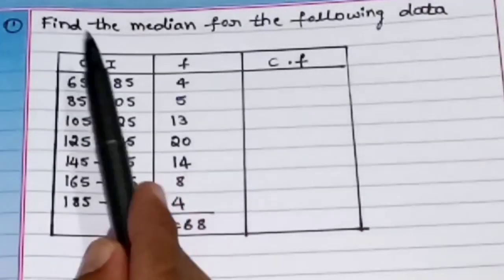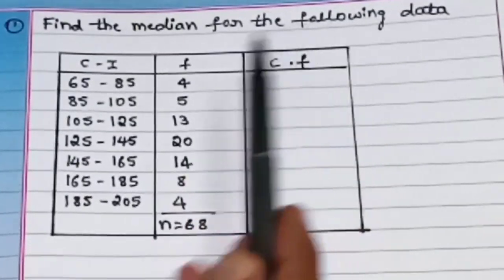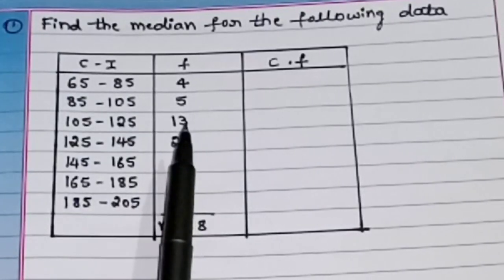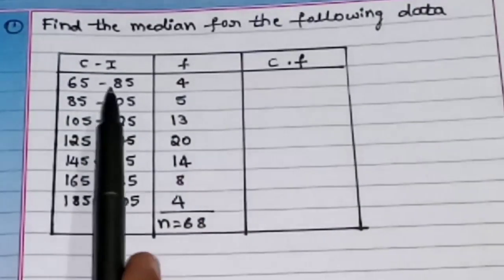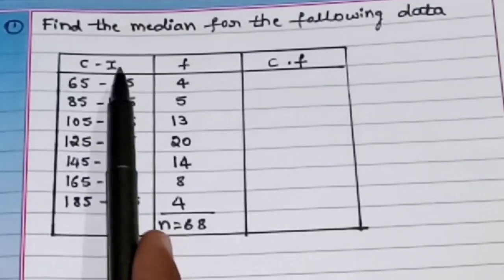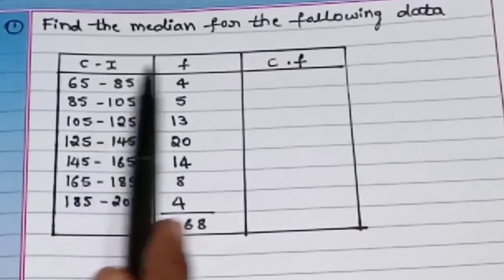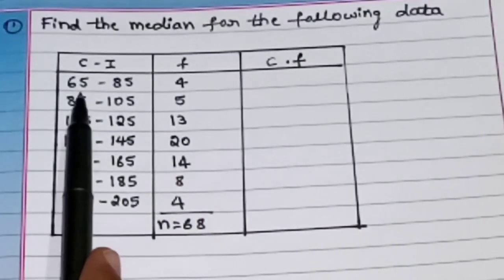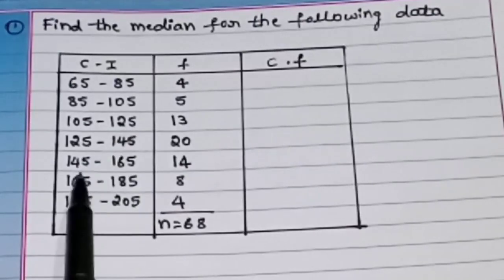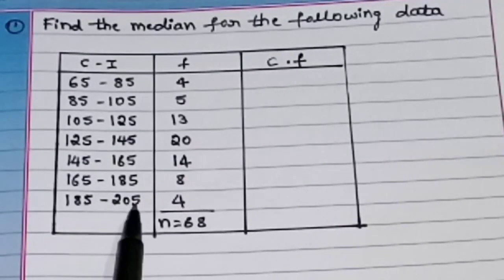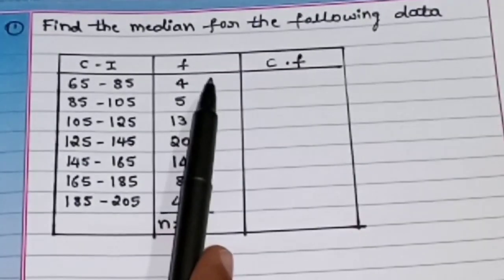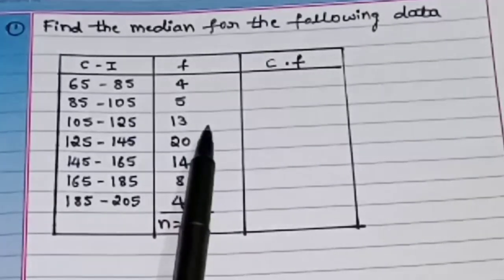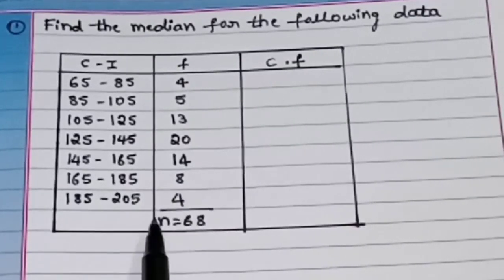The question is: find the median for the following data. As usual, in the question they have given the class interval and the frequency. The class interval starts from 65 to 85, 85 to 105, up to 185 to 205. They have also given the frequencies: 4, 5, 13, 20, 14, 8, and 4.